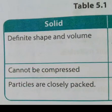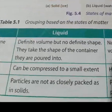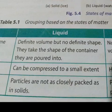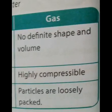Properties of solids: solids have definite shape and volume, cannot be compressed, and their particles are closely packed. Properties of liquids: liquids have definite volume but no definite shape; they take the shape of the container they are poured into; they can be compressed to a small extent; and their particles are not as closely packed as in solids. Properties of gases: gases have no definite shape and volume, are highly compressible, and their particles are loosely packed.